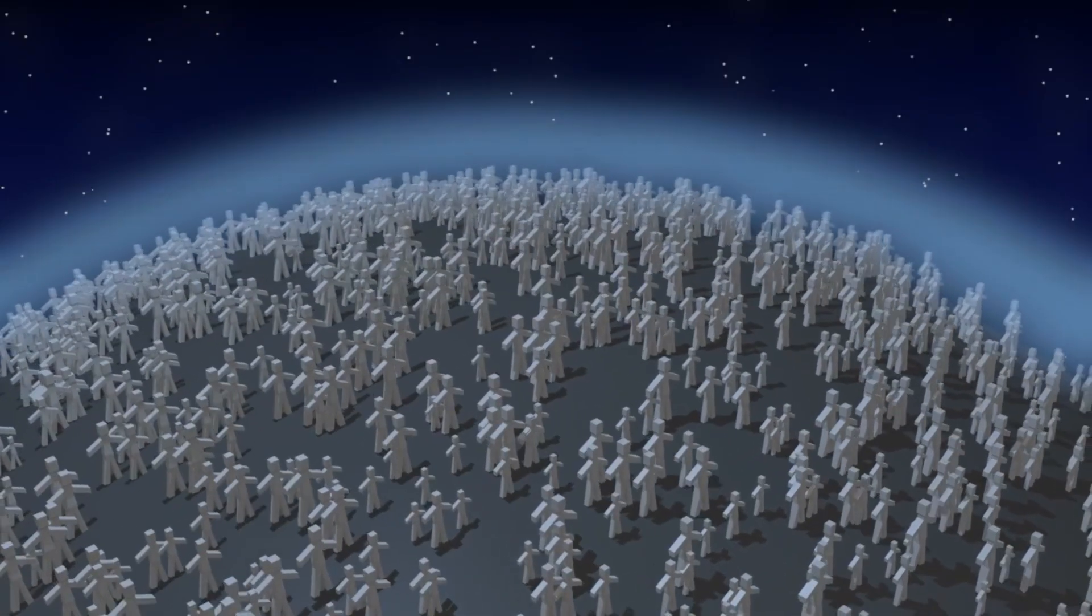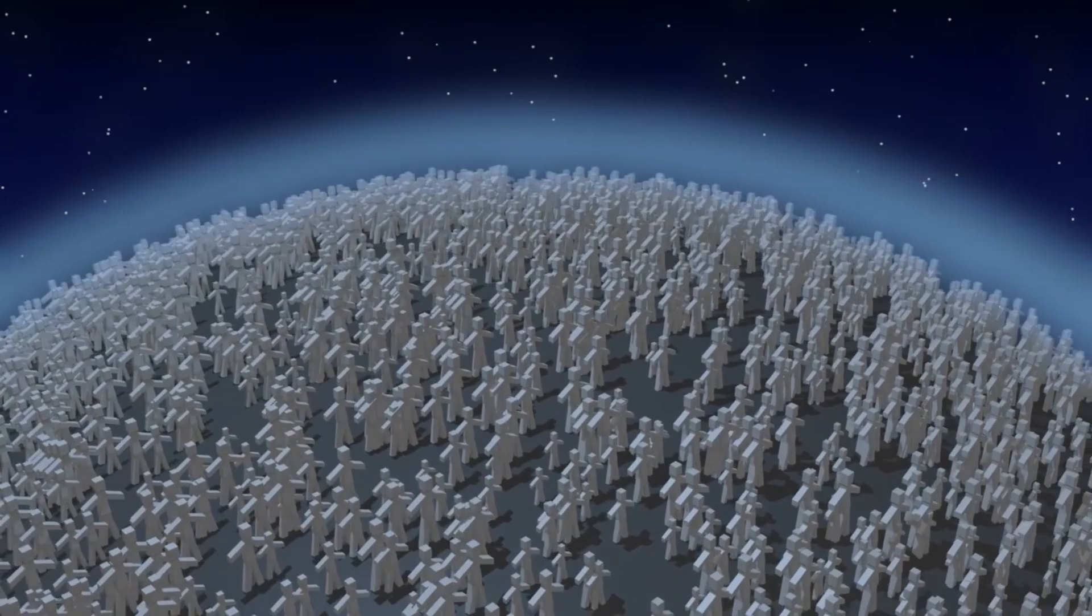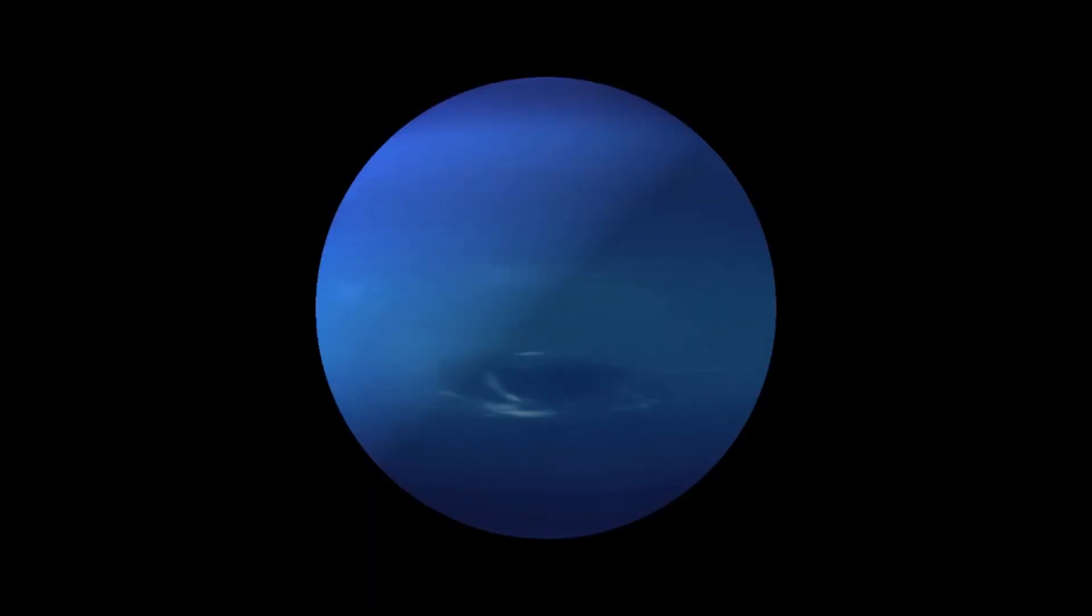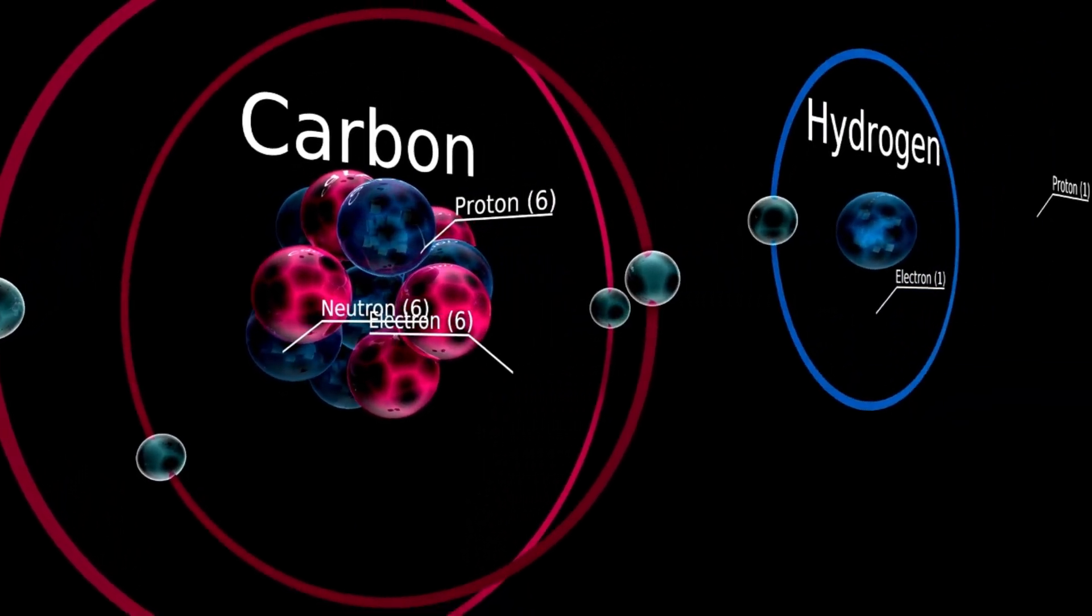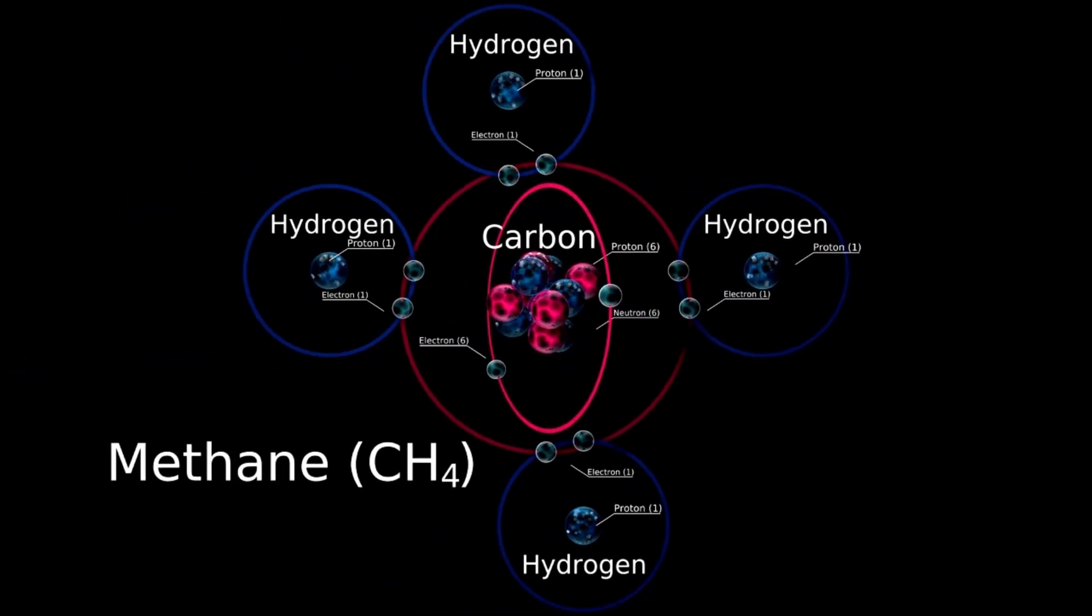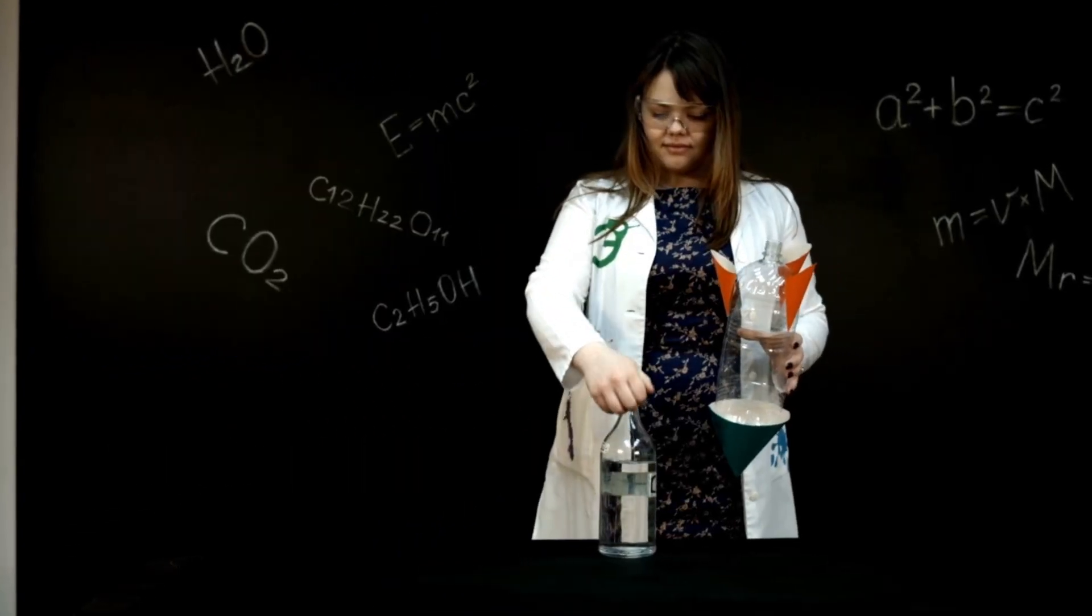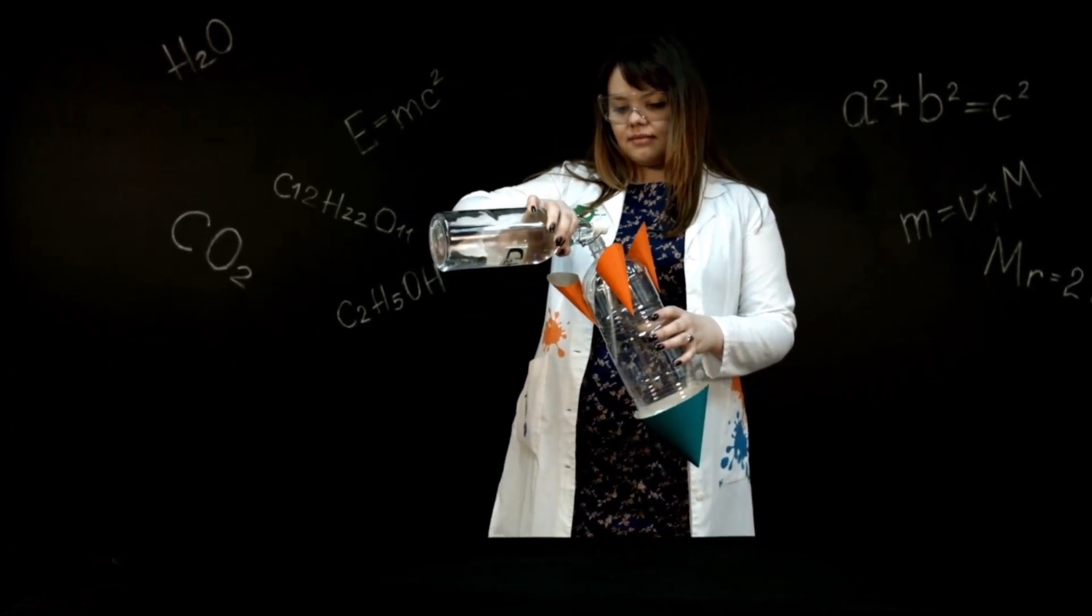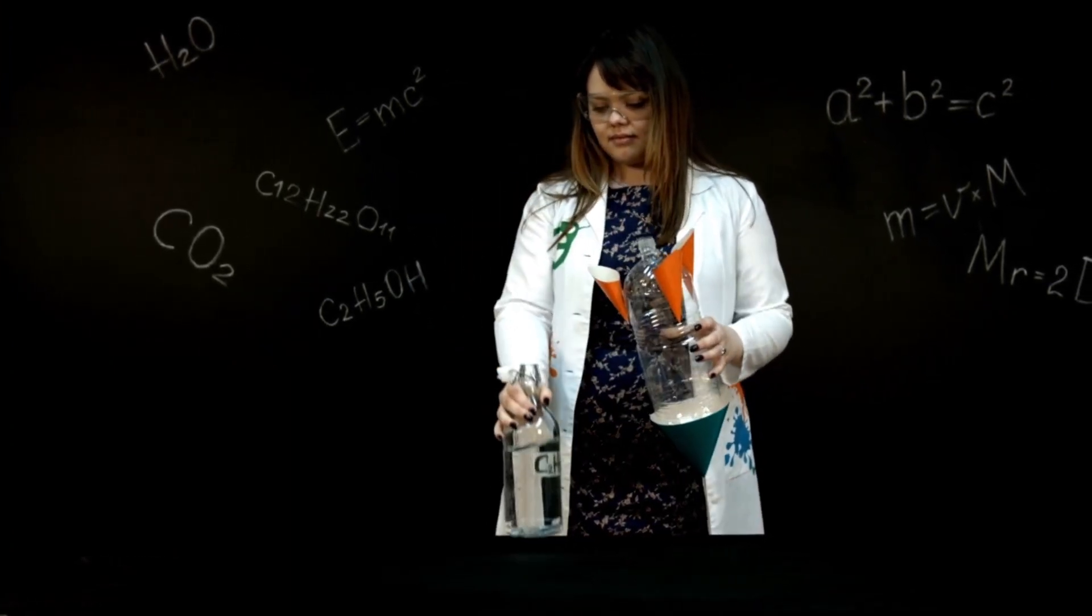Exoplanets like K2-18b, which fall into a category between the sizes of Earth and Neptune, are rare in our own solar system. In fact, the absence of similarly sized planets nearby underscores the uniqueness of this class. The possibility that K2-18b may harbor a significant abundance of carbon-based molecules within a hydrogen-rich atmosphere is particularly tantalizing. Many astronomers now believe that these types of exoplanets might offer ideal environments to search for signs of life.